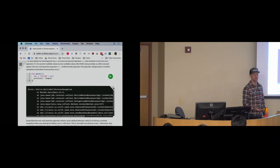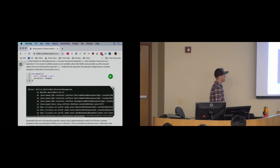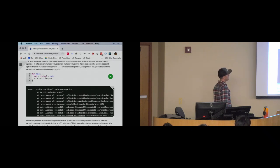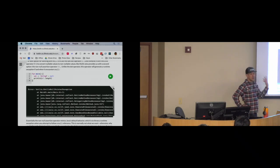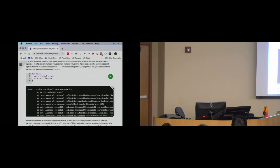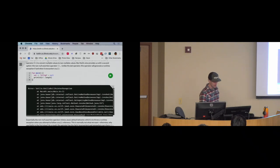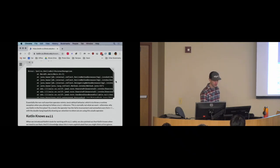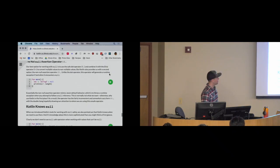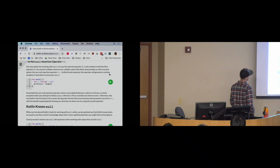Sometimes throwing an exception is the right thing to do. But in general, why use Kotlin in the first place if you just want to generate null pointer exceptions? When you see `!!` in code, it really jumps off the page because of those two exclamation points. It's not normally what we want, but there are legitimate use cases for it.